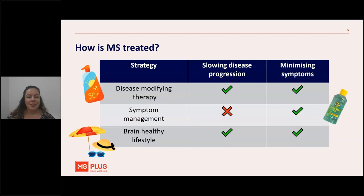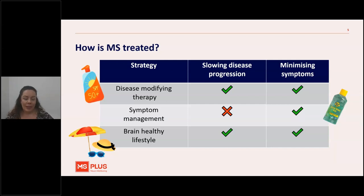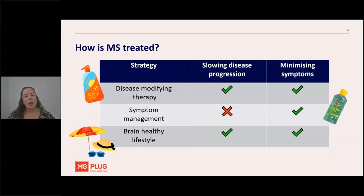So how is MS treated? There are three main branches. Disease modifying therapy is what we're going to cover today, and the two other branches are symptom management and a brain healthy lifestyle. Disease modifying therapy is like your sunscreen — it's going to slow disease progression over time, and by doing that it minimises the symptoms that develop. It doesn't necessarily make you feel better day to day, but it stops the MS from progressing as much as it would without treatment.